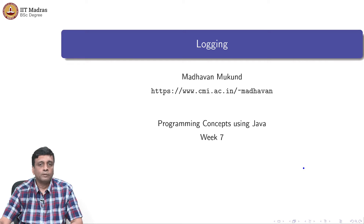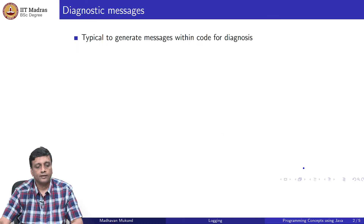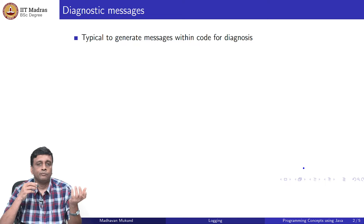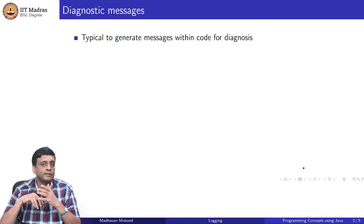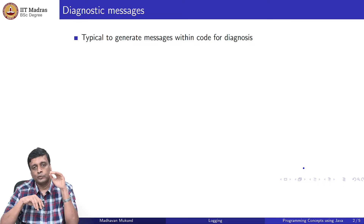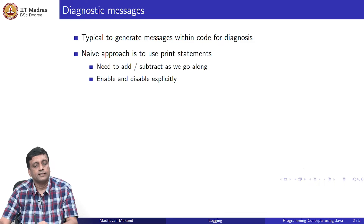The last item in the theme of errors and exceptions is logging. It is quite typical when we write code and something goes wrong to print out a diagnostic, saying at this point x is so much. We want to know exactly what happened — we got an unexpected output, maybe the program did not crash, but we did not get the answer that we wanted. We trace through the program and find out where the value we were expecting was different. We insert these diagnostic messages, which are typically inserted as print statements.